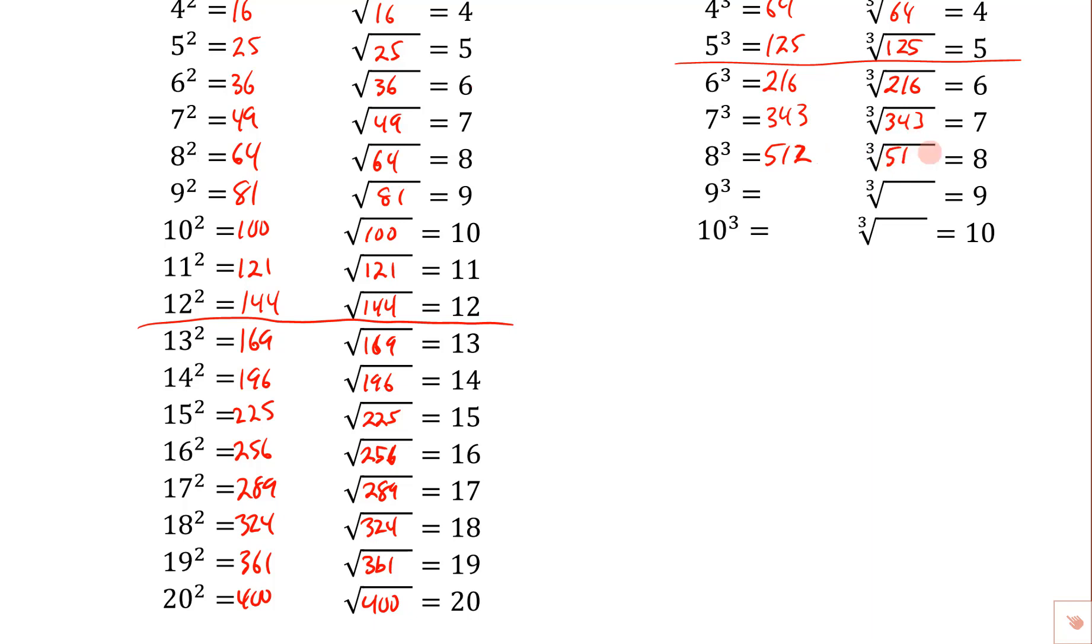And 9 cubed is 729, so the cube root of 729 is 9, and then this will come up quite often.